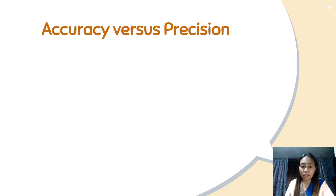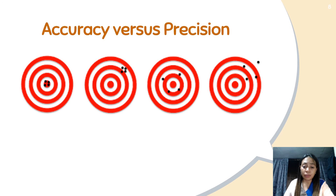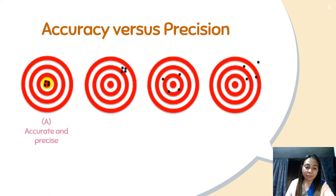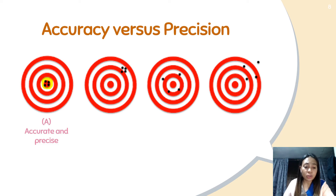For us to clearly see the differences between accuracy and precision, here's a simple task. We have four different sets of readings. In the first reading, all four are close to each other and they are at the center of the dartboard. What can you say about the measurement? It is both accurate and precise — accurate because all four hit the target point, and precise because all four readings are also close to each other.